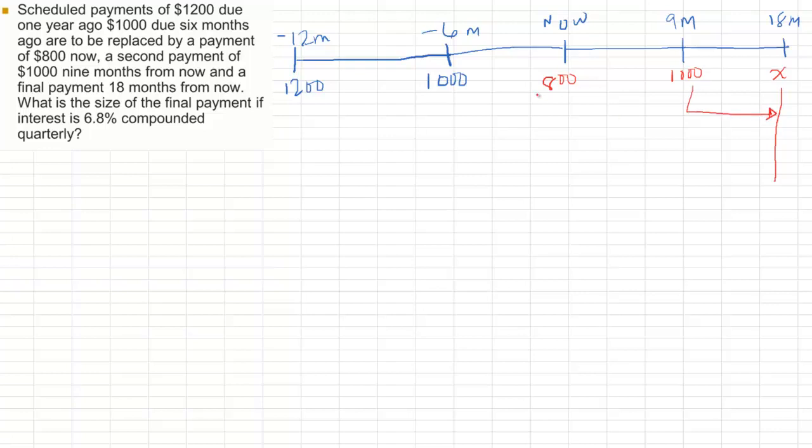You can use any focal date, but the easiest is to use 18 months. That way it's less calculations. So what we do is we bring all monies to the focal date. We look at the times. From here, 12 months to 18 months, that's 30 months. Six months ago to 18 months is 24 months. Now to 18 months is 18 months. And 9 months to 18 months is 9 months.